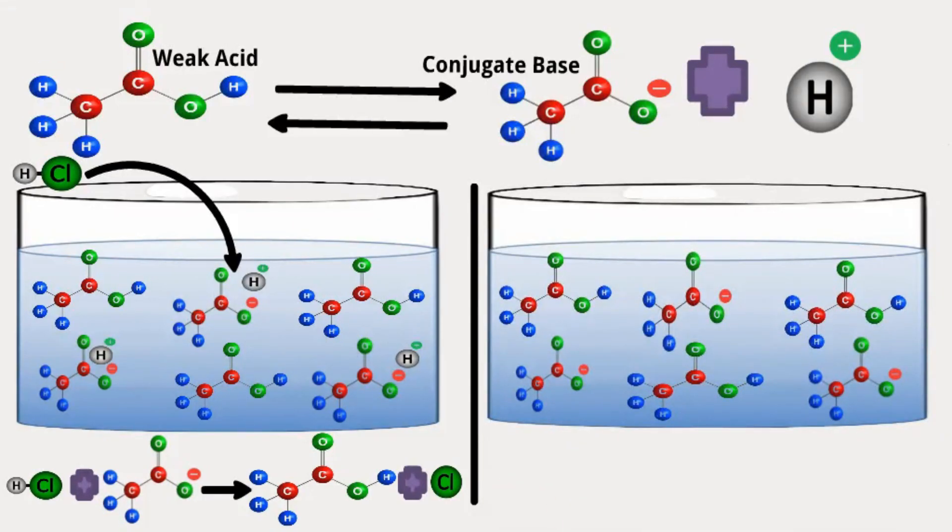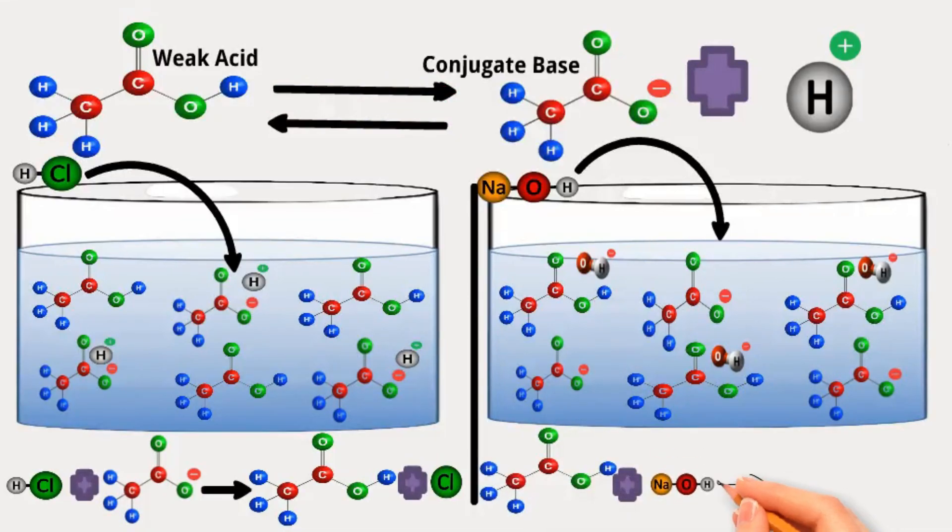If you add sodium hydroxide, NaOH, the excess hydroxide ions react with acetic acid to form acetate ions. The equilibrium shifts to the right. So, more acetate ions will be formed to minimize the impact of the strong base on the pH of the solution.